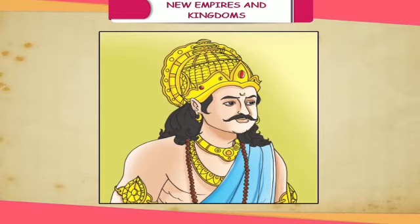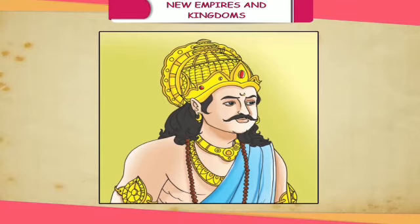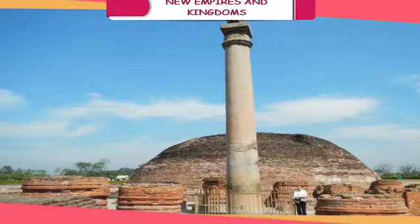Samudragupta: Chandragupta I was succeeded by Samudragupta in about 330 CE. He reigned for about 50 years. Inscriptions on a pillar erected by Ashoka also contain inscriptions about Samudragupta on the other side. Samudragupta was especially skilled in music and singing, and was also well known for his poetry. He played musical instruments including the Veena.